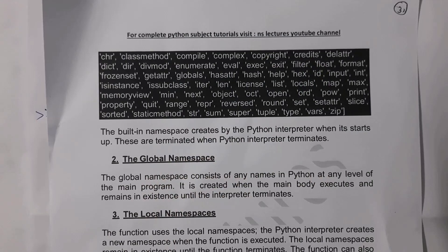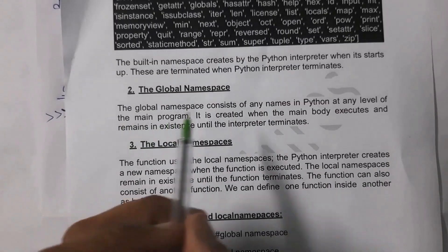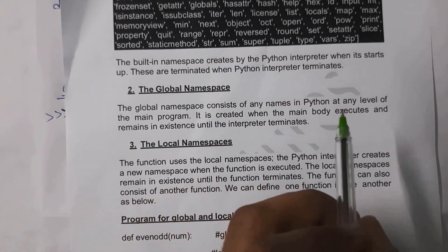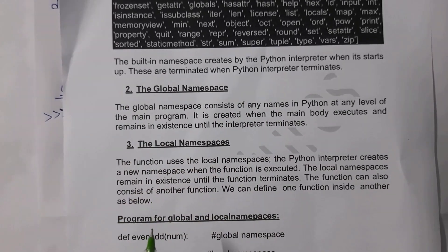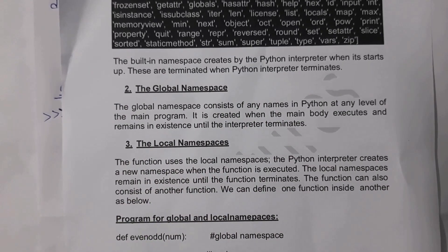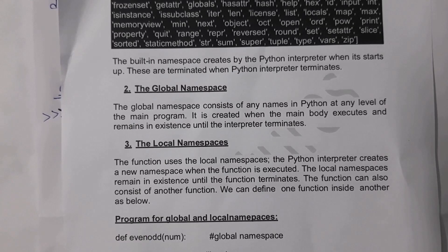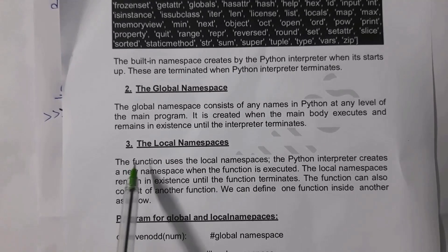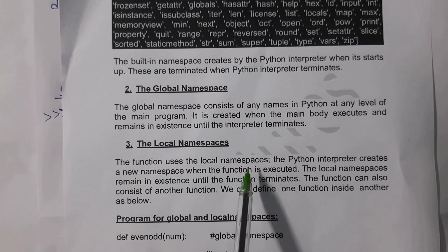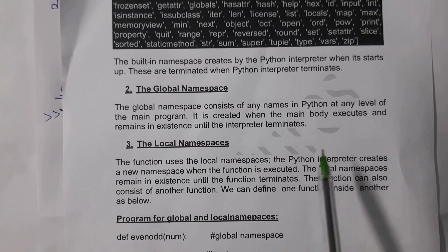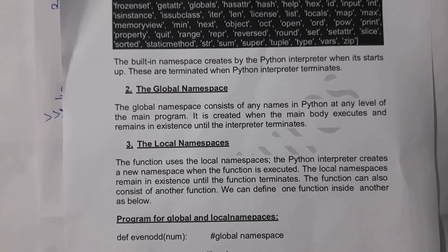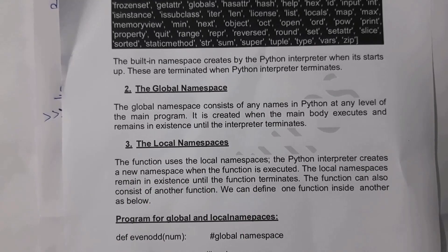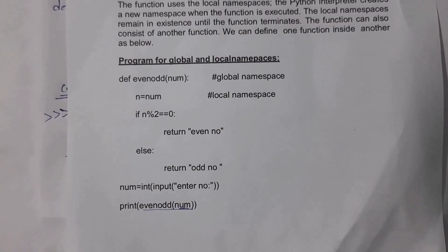The global namespace consists of any names defined at any level of the main program. Local variables are variables which are declared inside a function. The function uses local namespaces. The Python interpreter creates a new namespace within the function during execution. Let's look at a program demonstrating local and global namespaces.